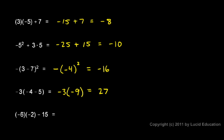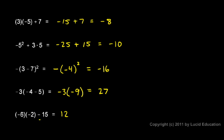And in this last one, I have negative 6 times negative 2 minus 15. I do this multiplication before I subtract the 15. So let's rewrite it, carrying out this multiplication as we write the next step. Negative 6 times negative 2 is positive 12, because we have two negative numbers multiplied together. So this part is positive 12 minus 15, and 12 minus 15 is negative 3.